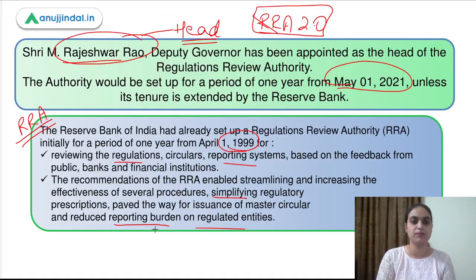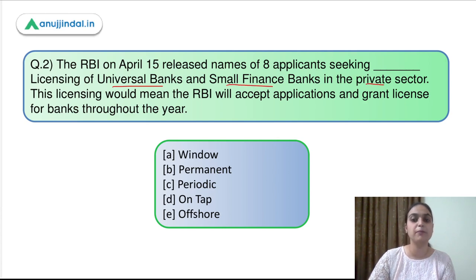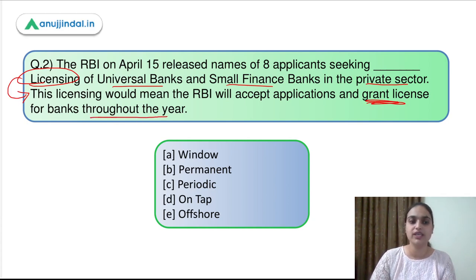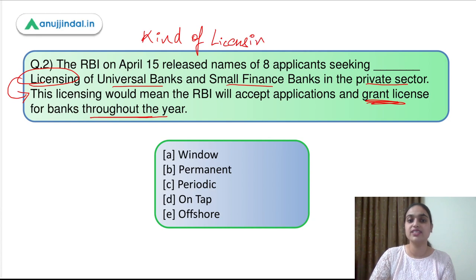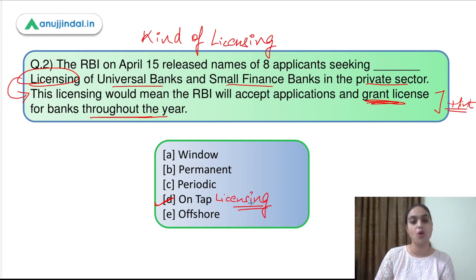Now let's move on to question number 2. This question says that RBI on April 15 released names of 8 applicants seeking a certain type of licensing of universal banks and small finance banks in the private sector. This licensing would mean RBI will accept applications and grant the license for banks throughout the year. So we have to identify the kind of licensing which has been mentioned in this question. The hint here talks about a type of licensing where RBI grants the license throughout the year. The answer to this question is option D — that is on-tap licensing. So let's discuss what on-tap licensing is.